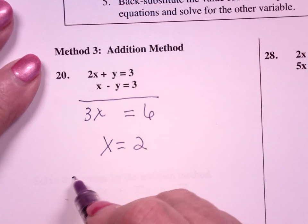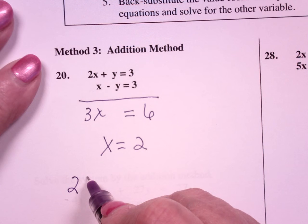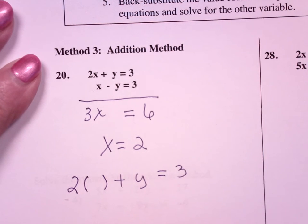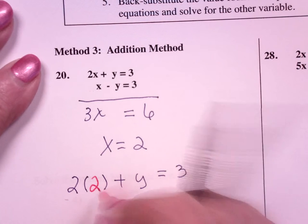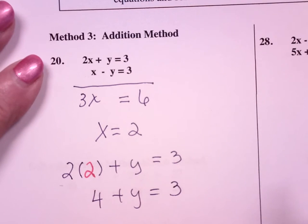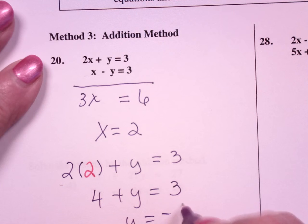Now if I go back in, this would be 2 times x plus y equals 3, and x is 2. It doesn't matter which equation you use, because remember they're shared values. 4 plus y equals 3, or y equals negative 1.